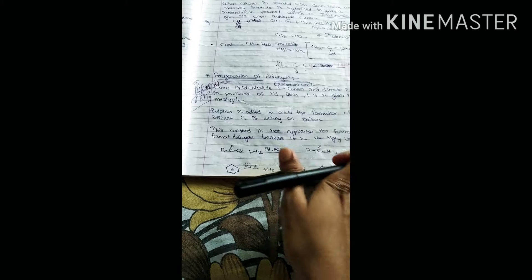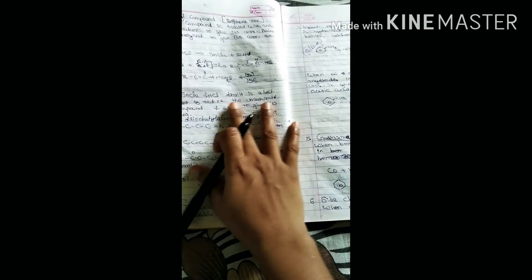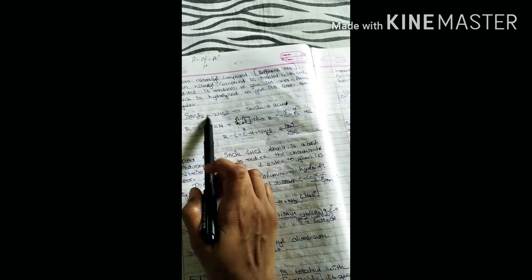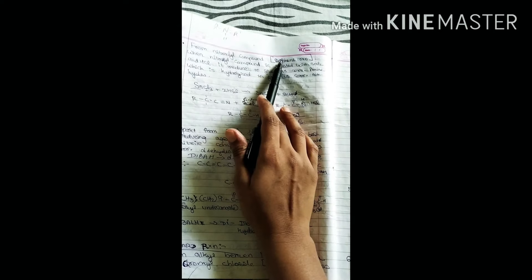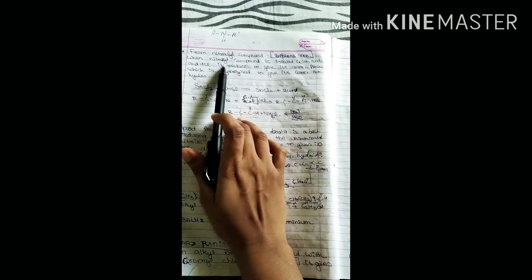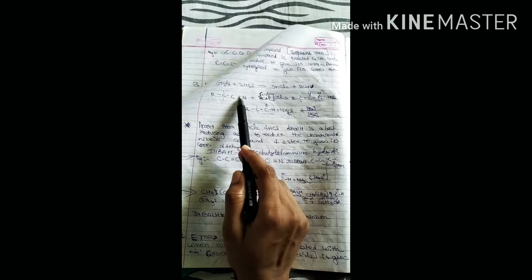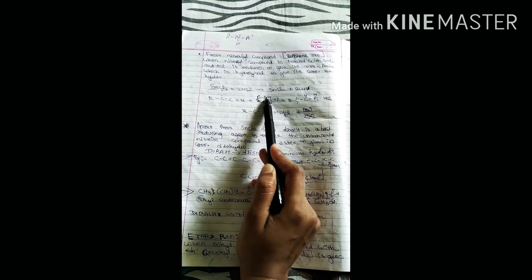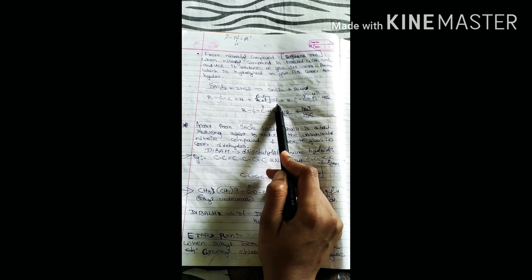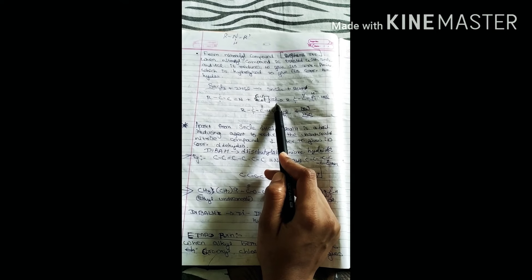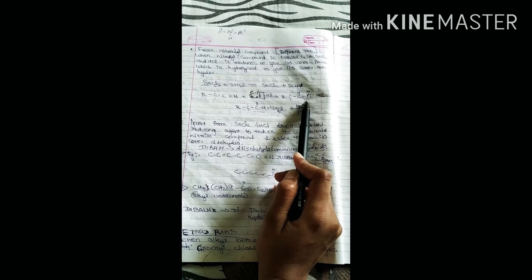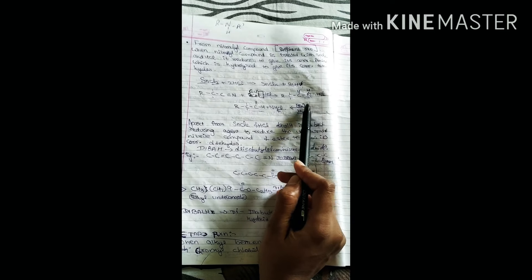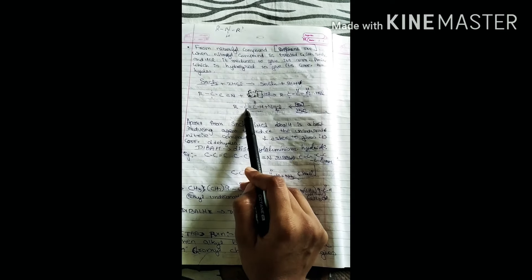From a nitrile compound, we get aldehyde — that is Stephen's reaction. In Stephen's reaction, when a nitrile compound is treated with SnCl₂ and HCl, we get an imine intermediate; when we hydrolyze it by boiling, we get aldehyde.